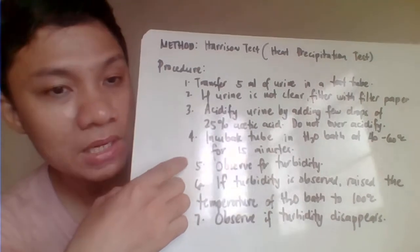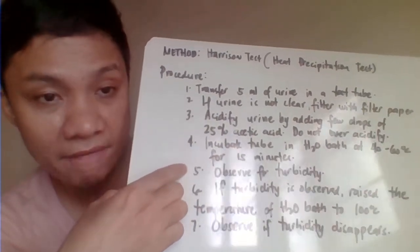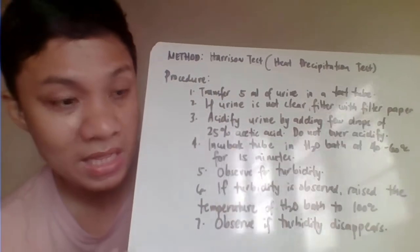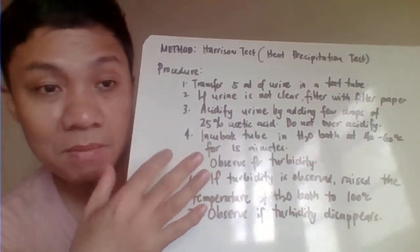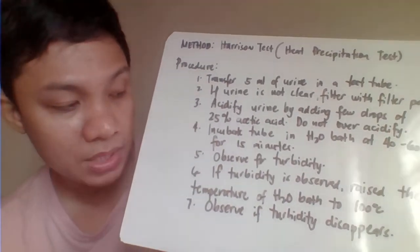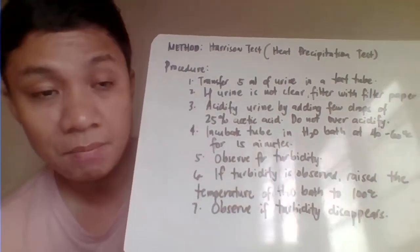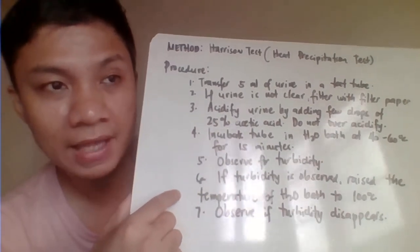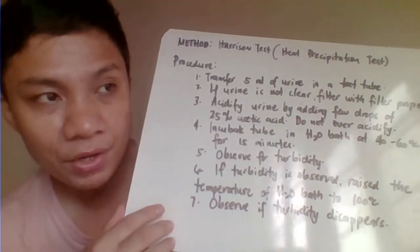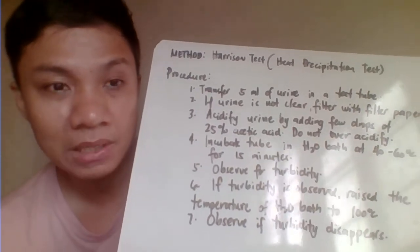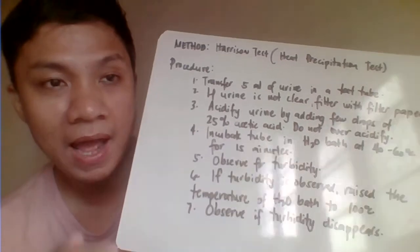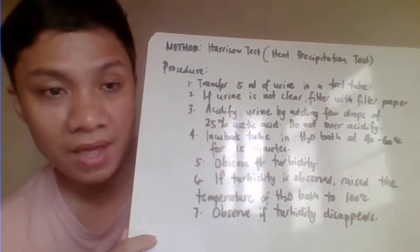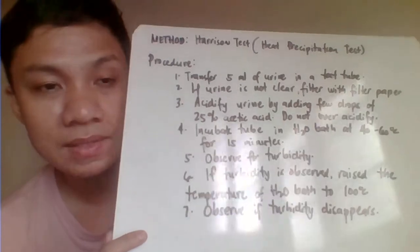If there is no turbidity, the result is already negative. But if there is turbidity, we are suspecting the presence of protein, and we need to differentiate whether it is really Bence Jones protein or another type of protein. Further subject the urine sample to 100 degrees Celsius for another 15 minutes, then observe. If the turbidity disappears after the 100 degrees Celsius incubation, that confirms Bence Jones protein. If the turbidity persists or increases, that is due to other proteins — report as negative for Bence Jones protein.